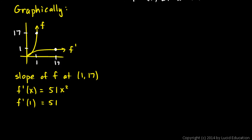I'll scroll down just a little bit to have some room to write it. I'll say the slope of f inverse at 17, 1, and that's what we were trying to find, is 1 over 51. And that's our answer.